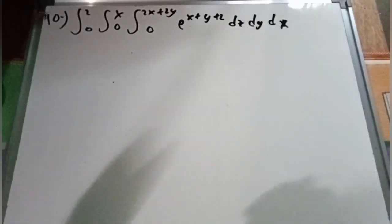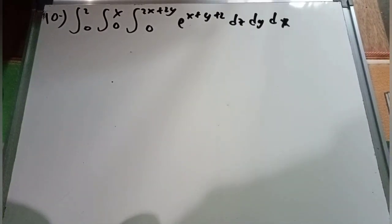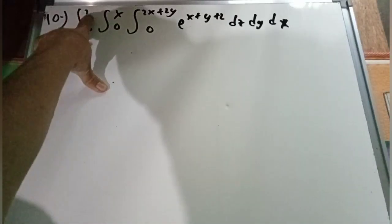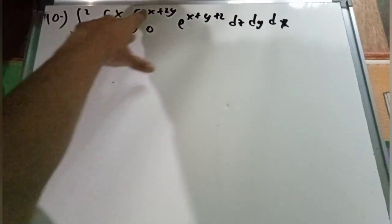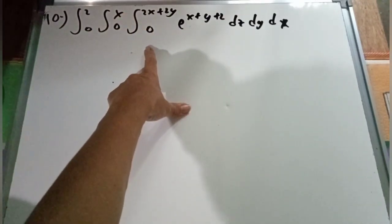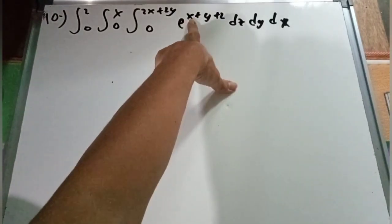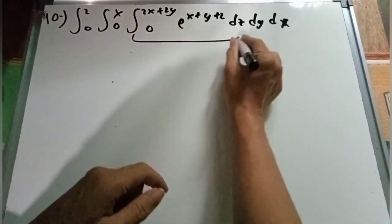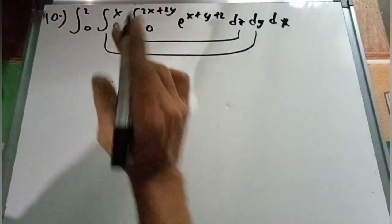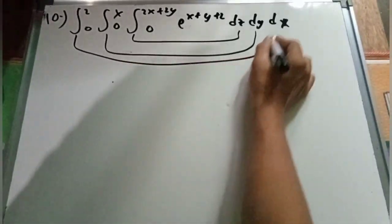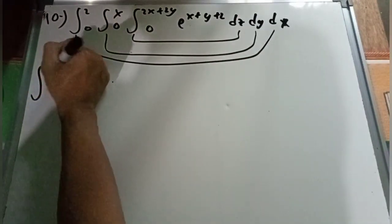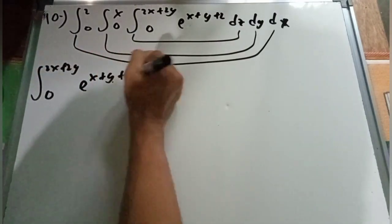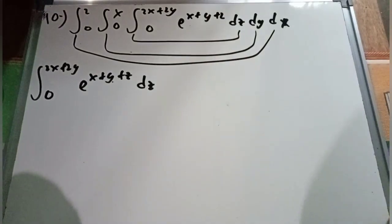This is problem number 10, the last problem of integral calculus, which is the triple integral. The problem is the integral from 0 to 2, x to 0, and 0 to 2x plus 2y, of e to the power of x plus y plus g, dg dy dx. So the order of integration is clear — we start with dg first.